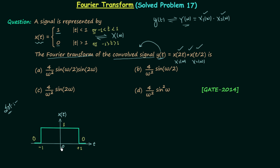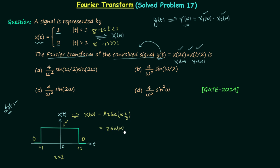This is the waveform of signal x(t). For a rectangular function as the time-domain signal, the corresponding Fourier transform is A·τ·sinc(ωτ/2). Here A = 1 and τ = 2, so X(ω) = 2·sinc(ω).